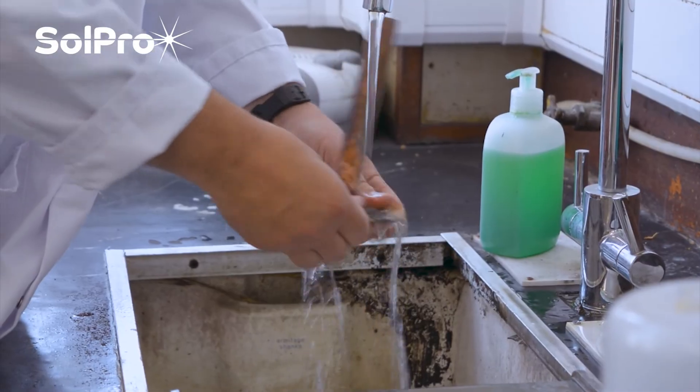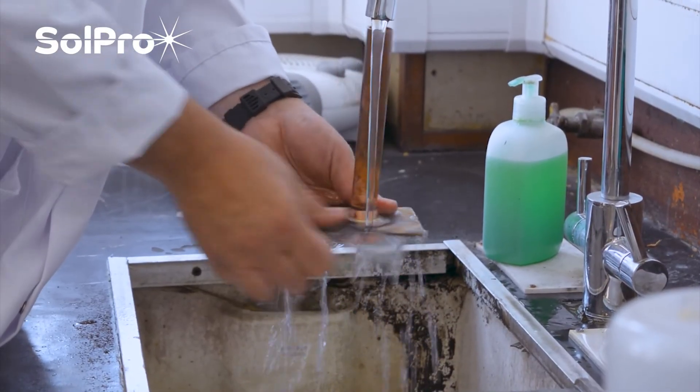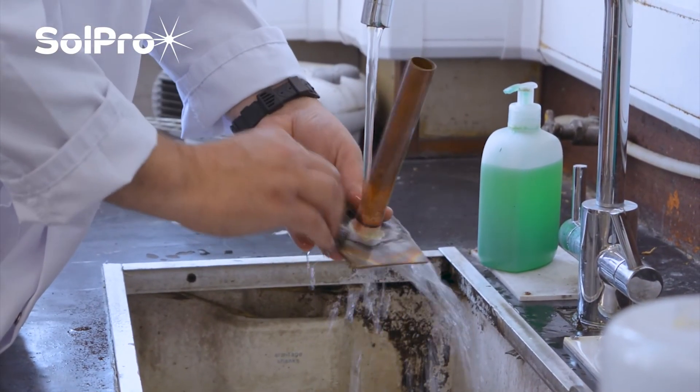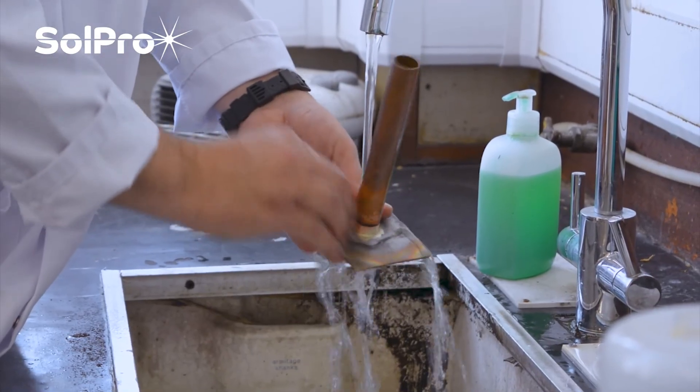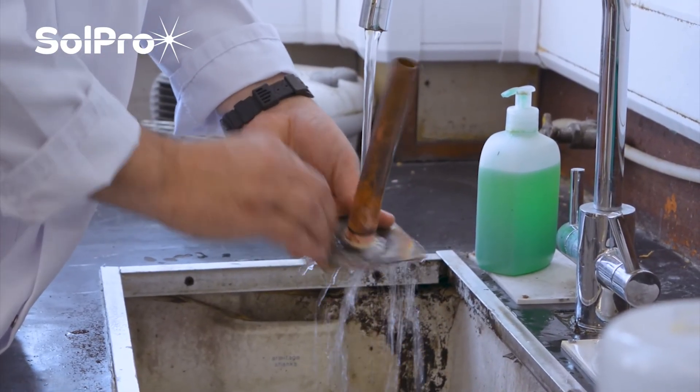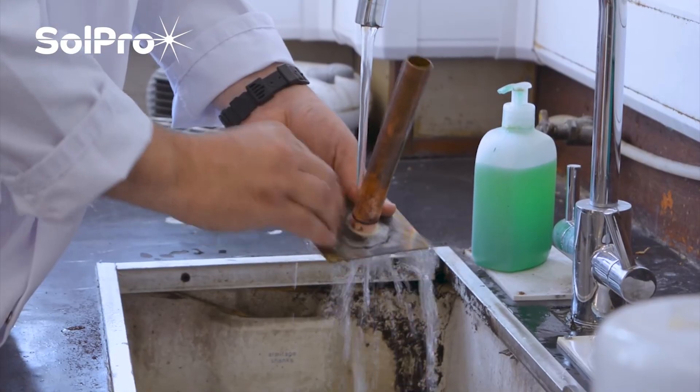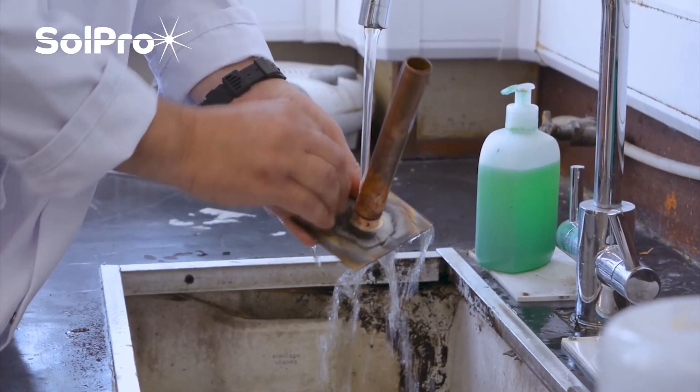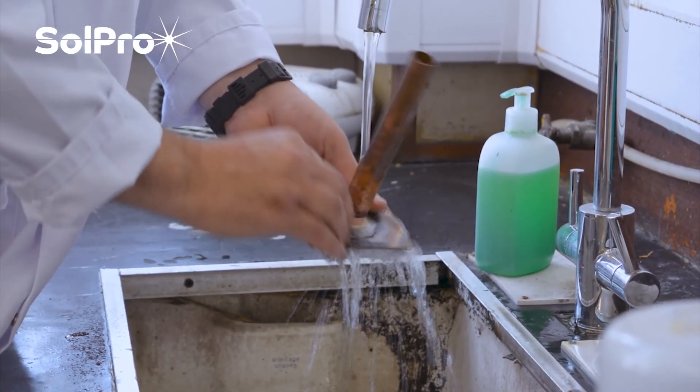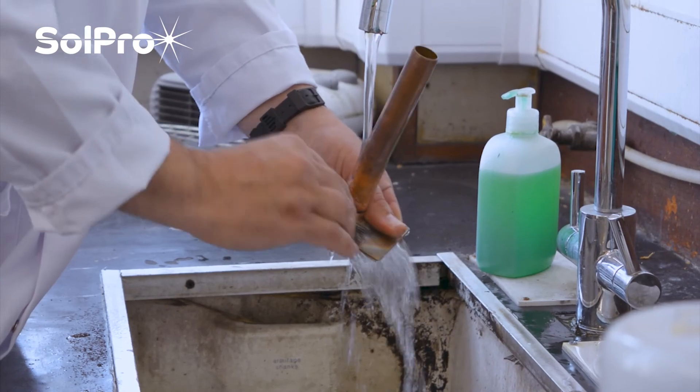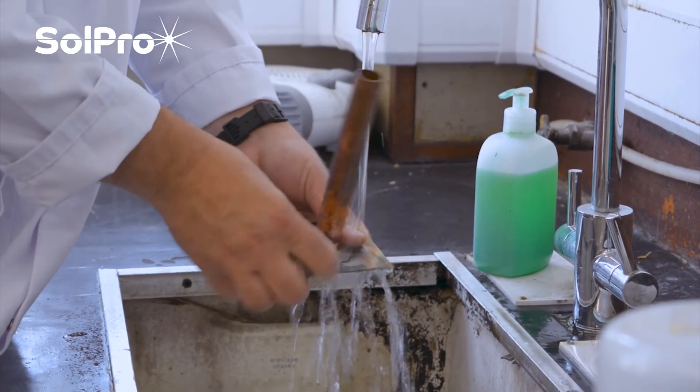Make sure when you've done any brazed joint that you give it a good clean with a mechanical wire brush or even just a bit of emery like this. This is an emery webbing which has got no paper backing, so it's really good in the wet.